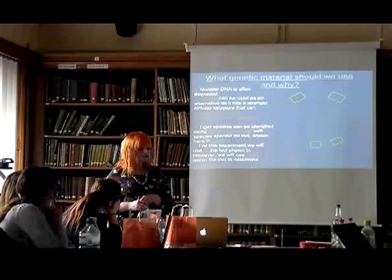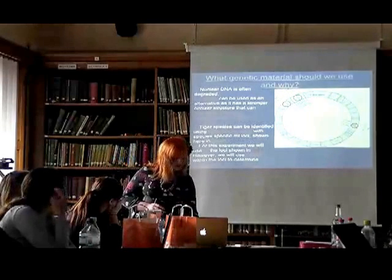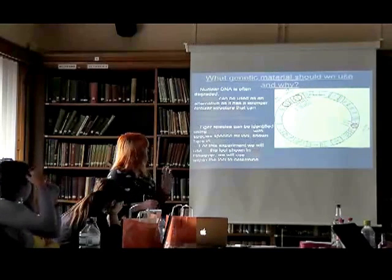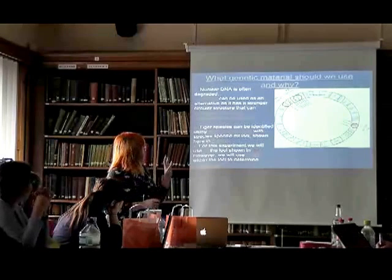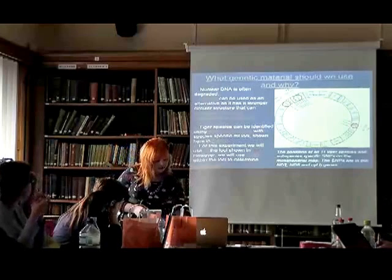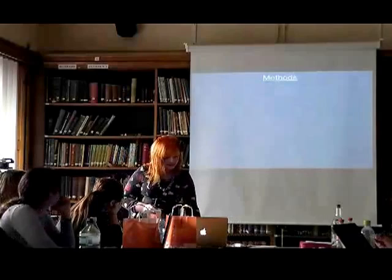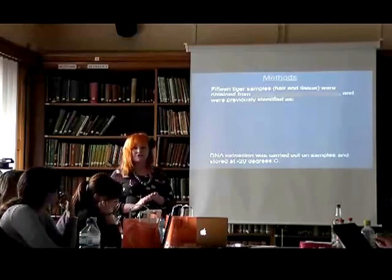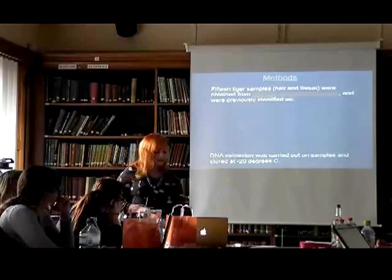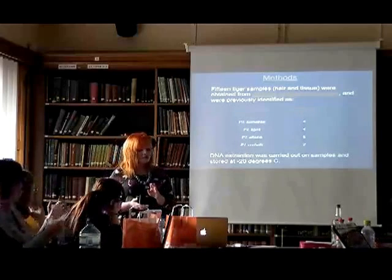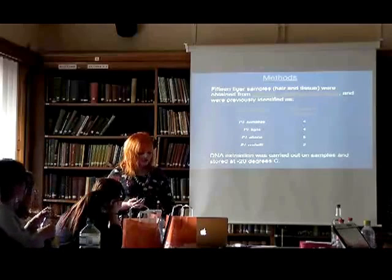Normally tiger species are identified using PCR with the methods shown in green, but for this experiment we are going to identify species and subspecies with the elements shown in red. We obtained 15 tiger samples — hair and tissue — where the hair was stored at room temperature and the tissue at minus 20 degrees Celsius. They were obtained from different unrelated individuals and were previously identified as four Sumatran tigers, four Bengal tigers, five Siberian tigers, and two Indo-Chinese tigers.